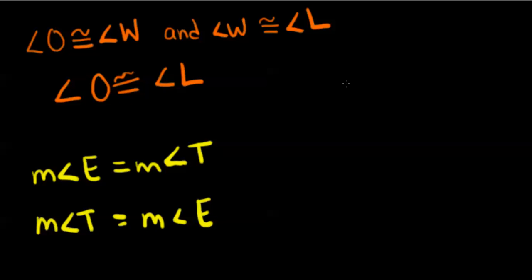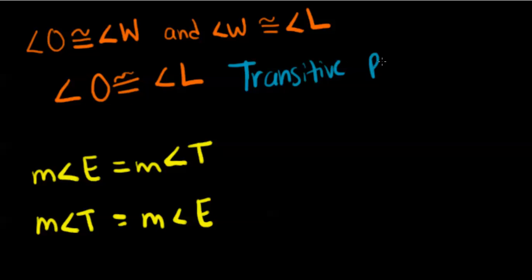Now we're going to look at an example of using properties of equality and congruence. Angle O is congruent to angle W, and angle W is congruent to angle L, so angle O is congruent to angle L. This is true based on the transitive property of congruence. In another example, the measure of angle E equals the measure of angle T, so the measure of angle T equals the measure of angle E — based on the symmetric property of equality.